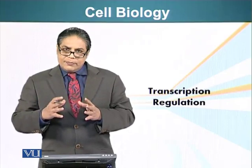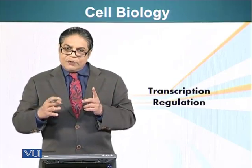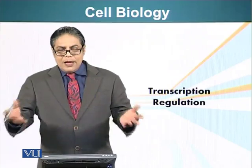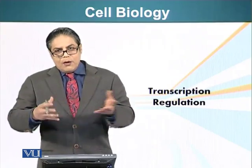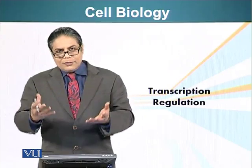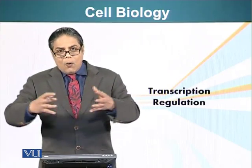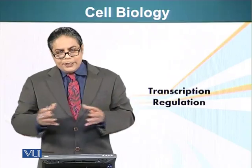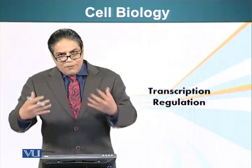All these cells come from a single cell, the fertilized egg or the zygote. We have so many different types of tissue — our heart cells, our liver cells, nerve cells, blood cells — they all are different. They have different proteins in them and they have different functions.